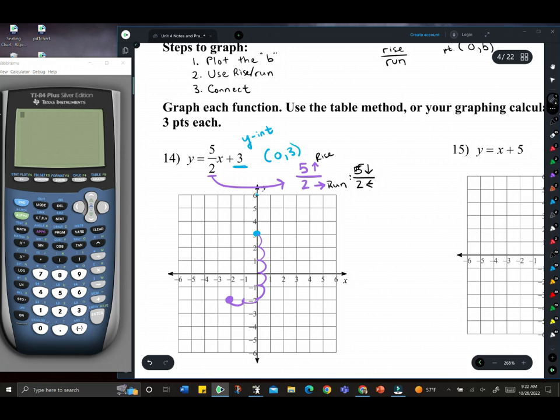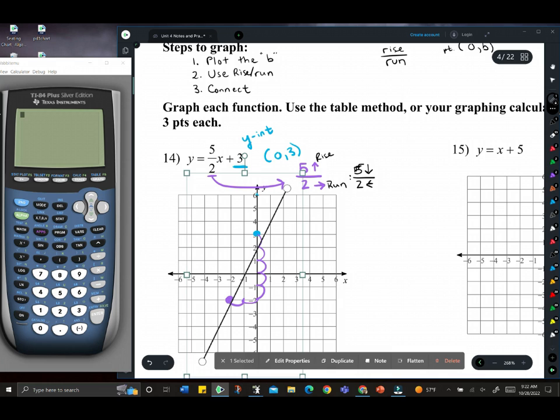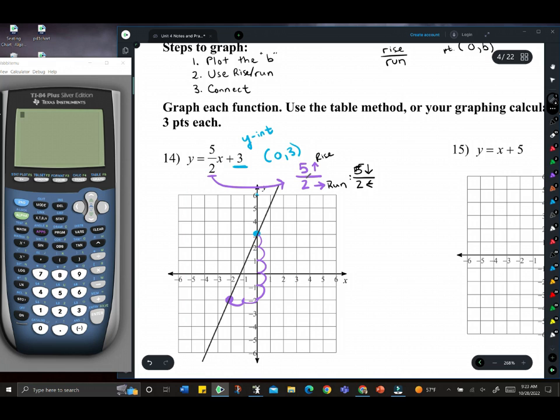Once you have those two points, you can connect them either using a straight edge or something to do your best to connect them with. And fortunately for me, I have this little tool, and there it is. There is the equation of the line. It gets a little tricky with rise over run, but we'll do some more examples and get you rolling.